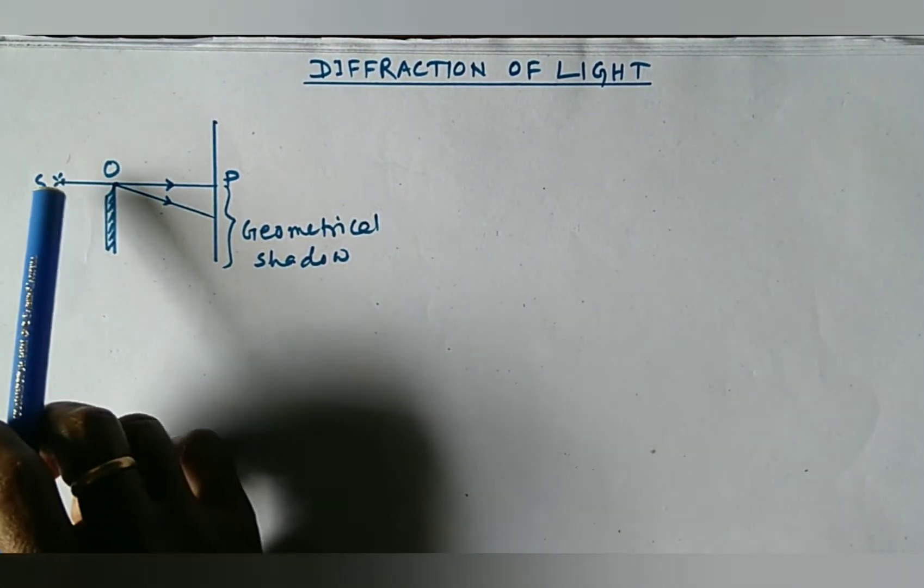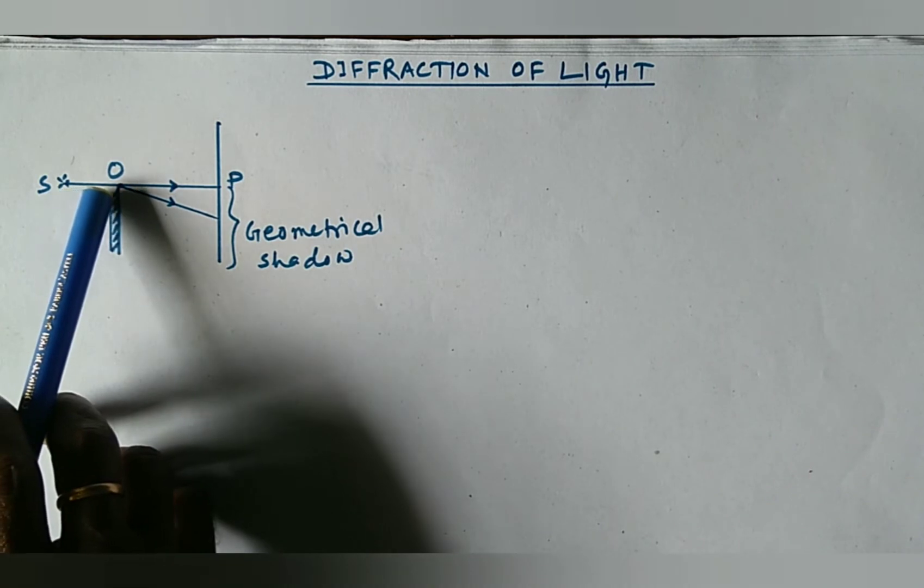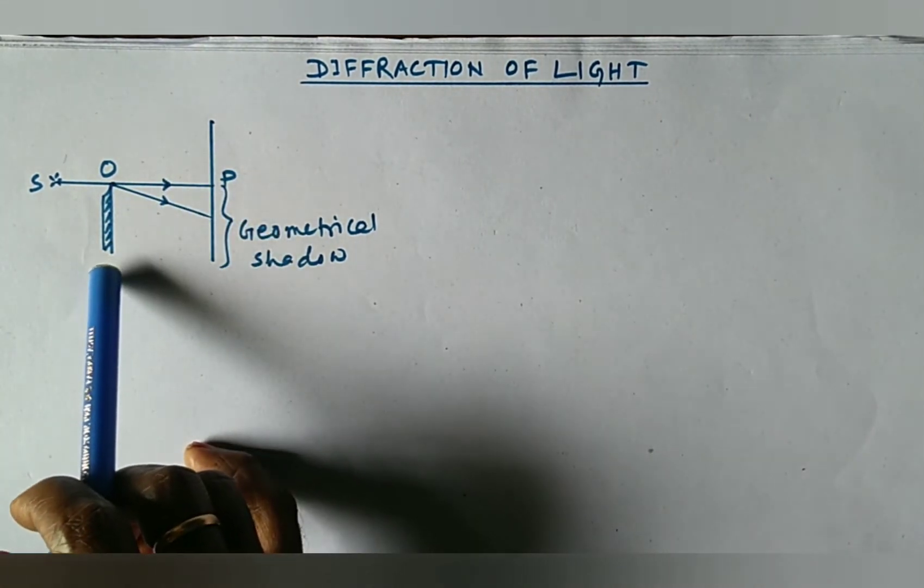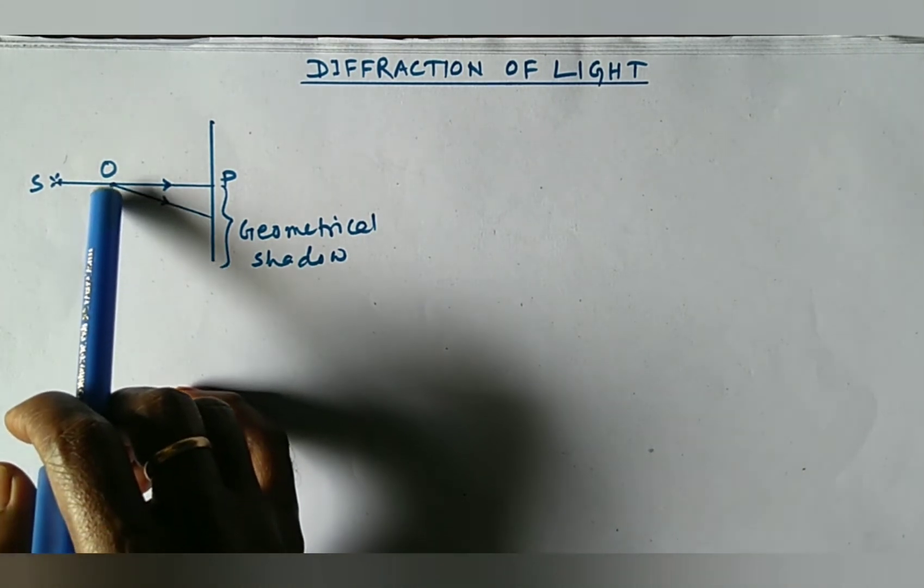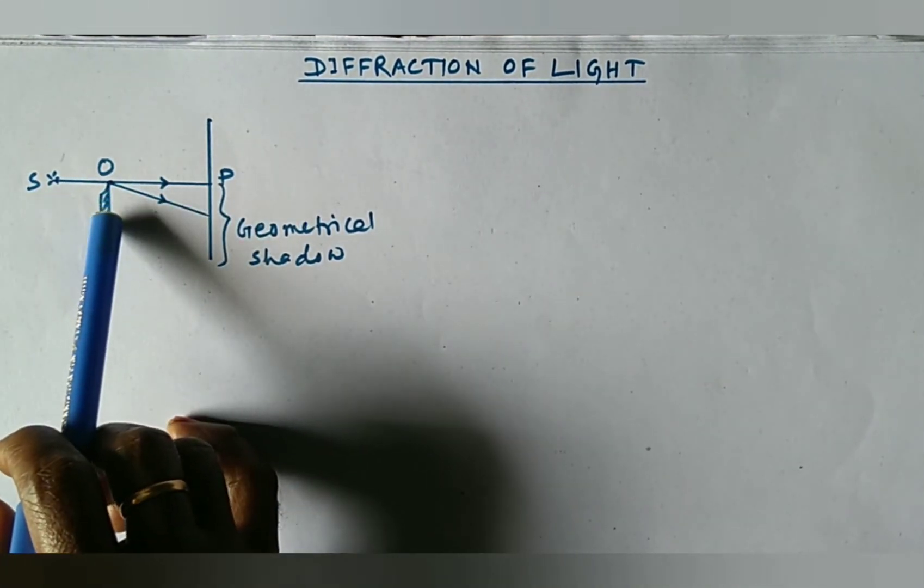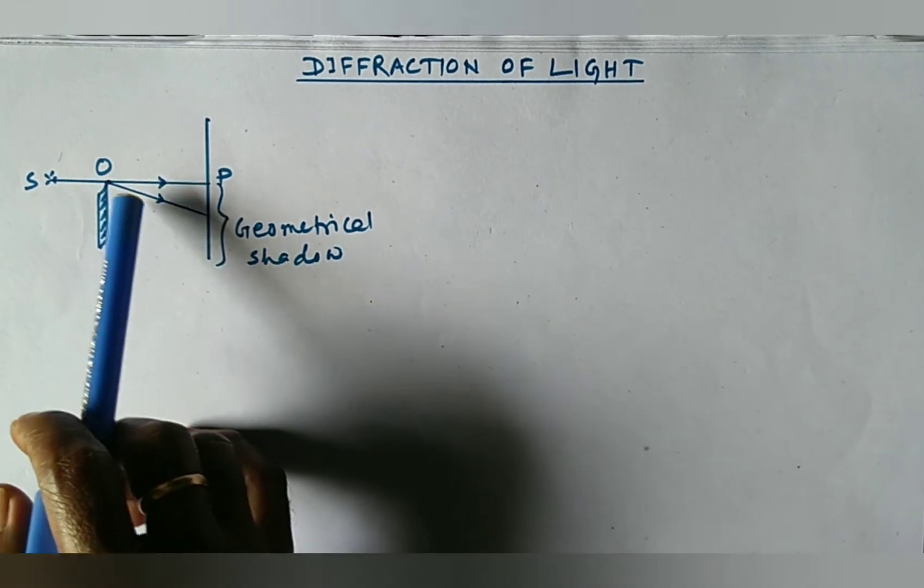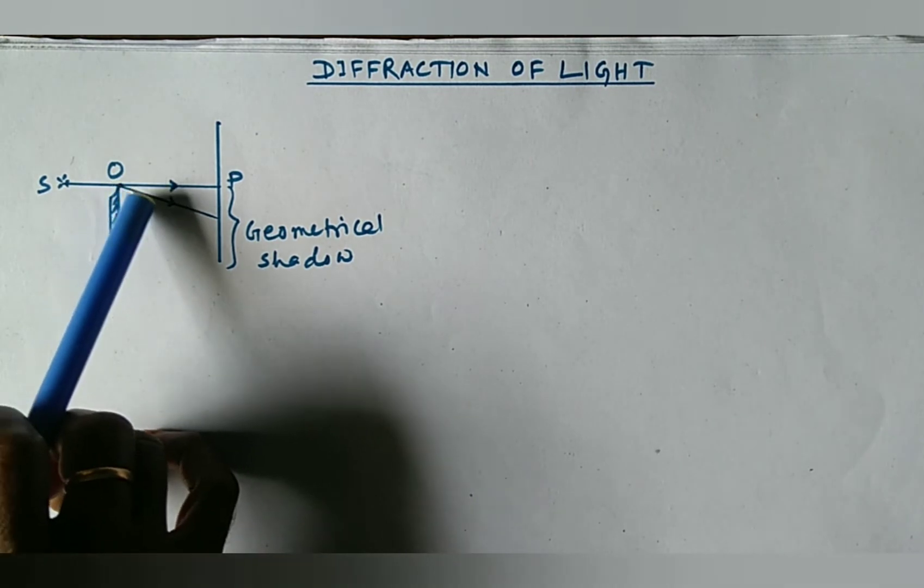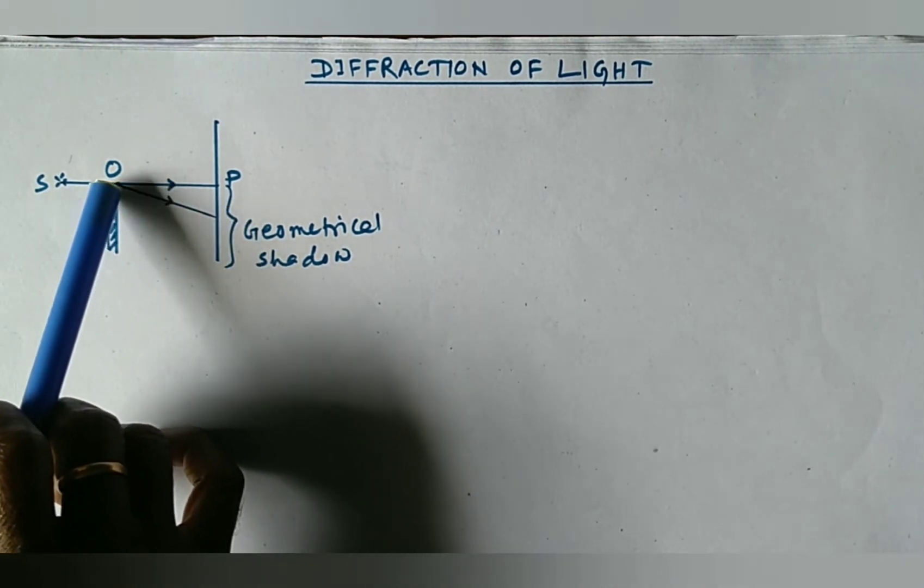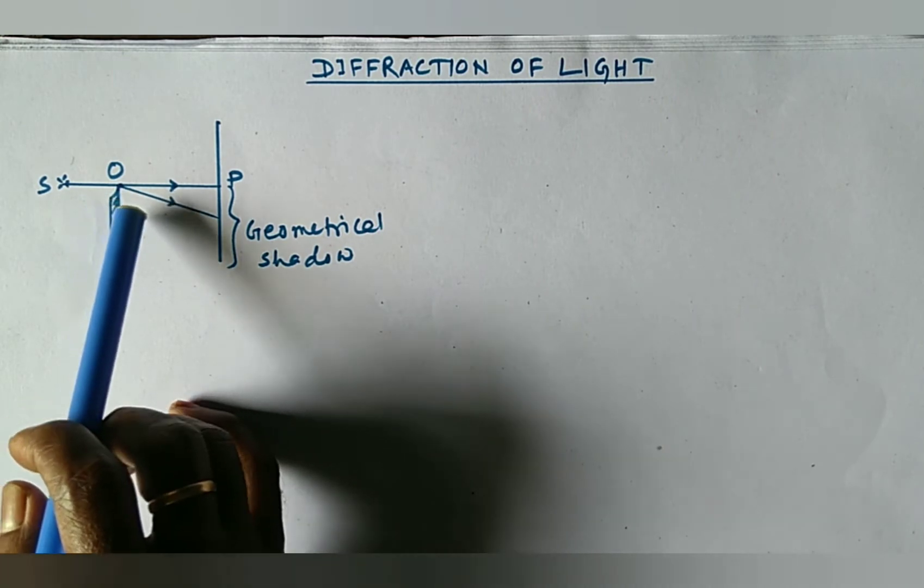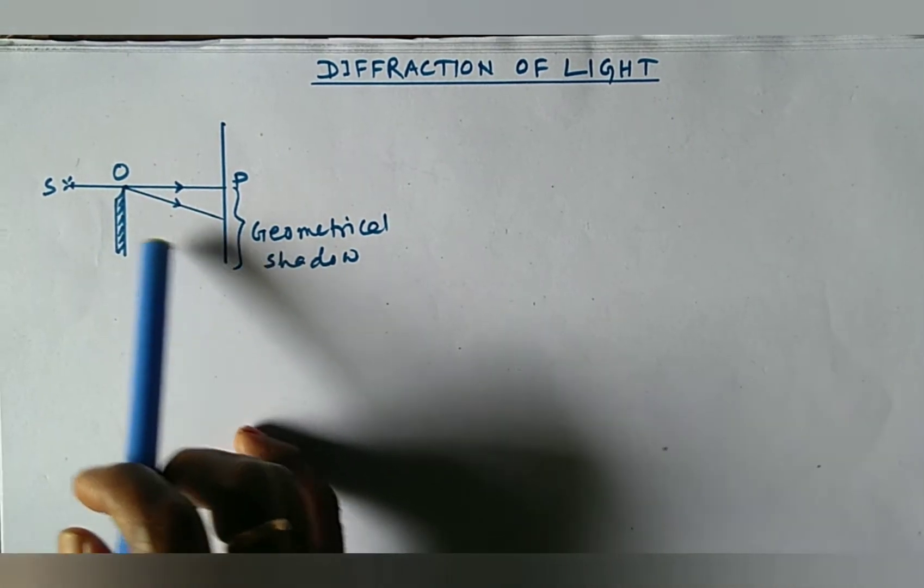This is a source and light propagates along the straight line. When we place a sharp edge in the direction of propagation of the light, we find that the light changes its direction at the point of incidence at the sharp edge.